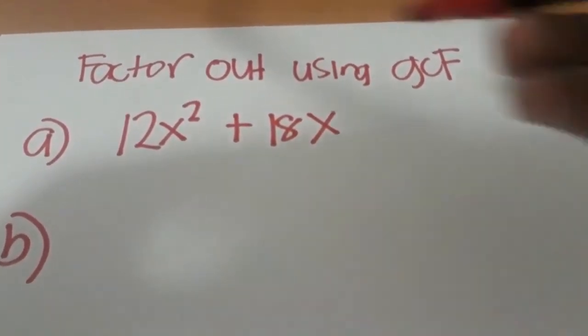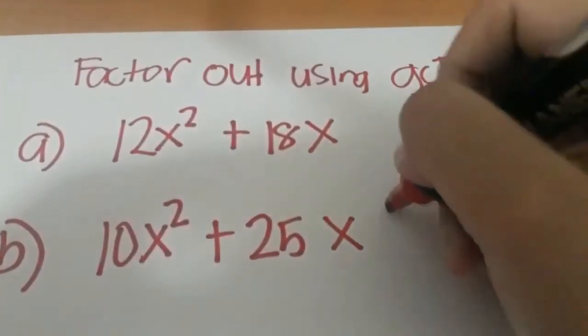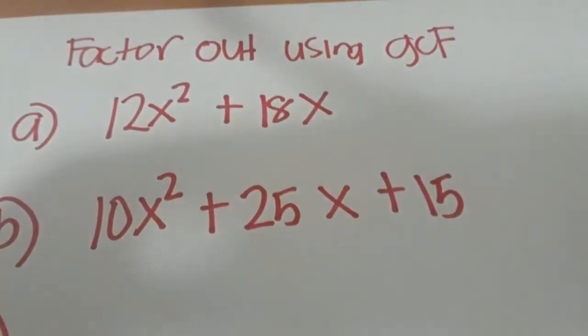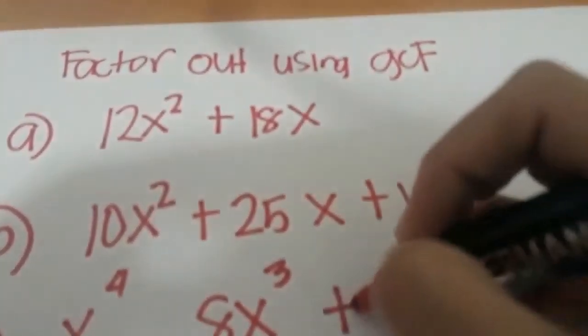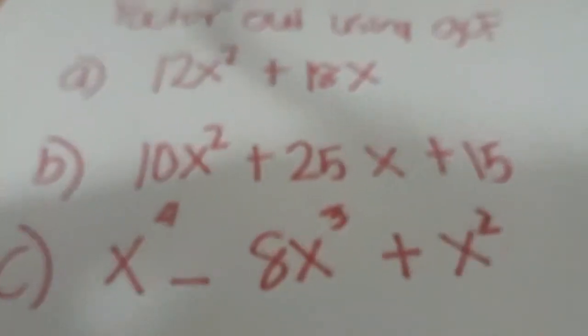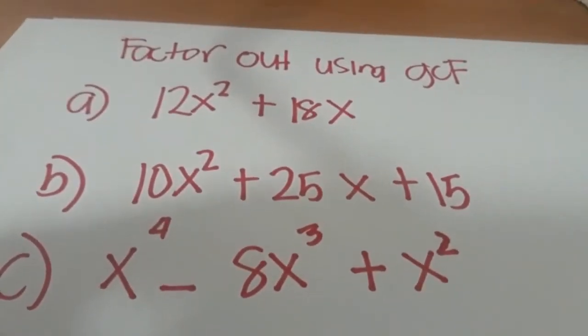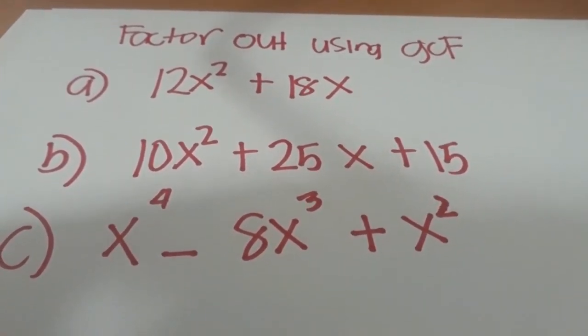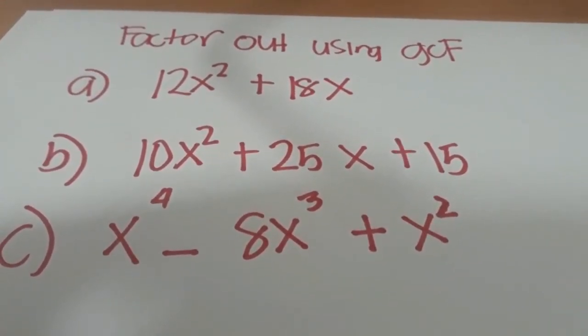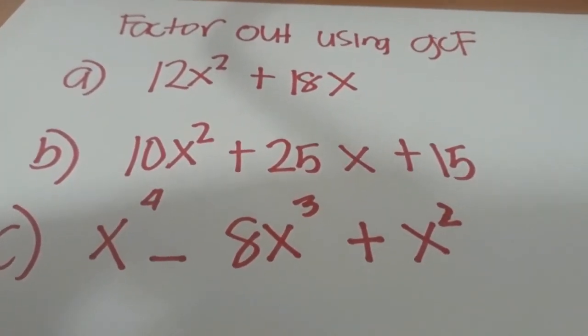Letter a: 12x² + 18x. Letter b: 10x² + 25x + 15. Letter c: x⁴ - 8x³ + x². You can factor this out using the three-step rule that I provided earlier. You have to first find the GCF for all the terms in the polynomial. Step 2 is express each term as a product of the GCF and another factor. And step 3, use the distributive property to factor out the GCF. Comment down your answer, thank you for watching.